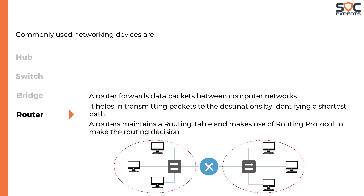Next we have ROUTER. A router forwards data packets between computer networks. It helps in transmitting packets to the destination by identifying the shortest path. A router maintains a routing table and makes use of routing protocols to make the routing decision.